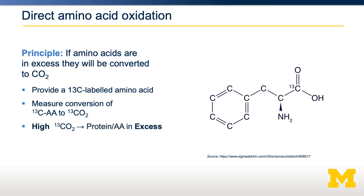If there are high levels of carbon dioxide being produced, that amino acid or protein is in excess. And if there are low amounts of carbon dioxide production, that suggests that amino acid is limiting.